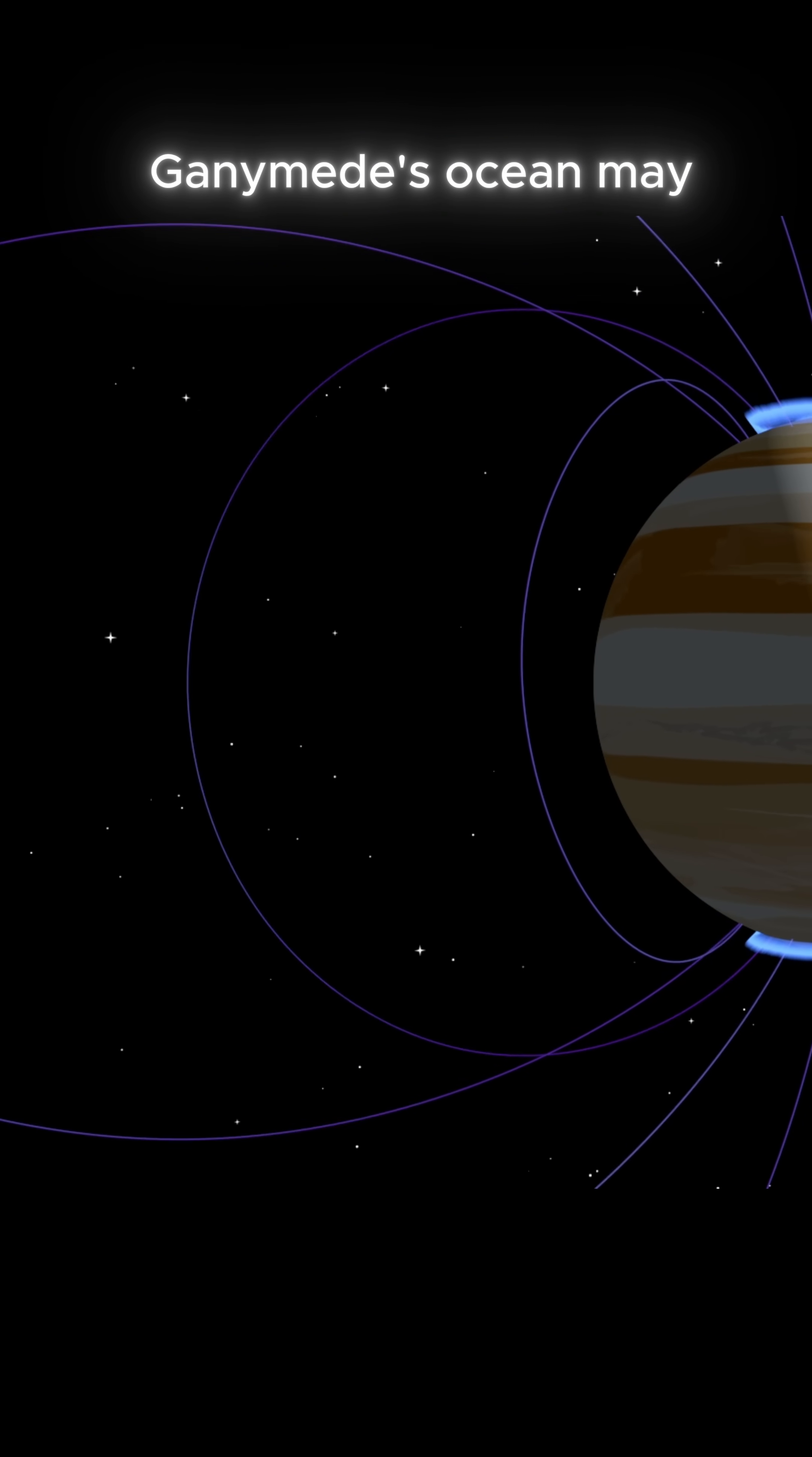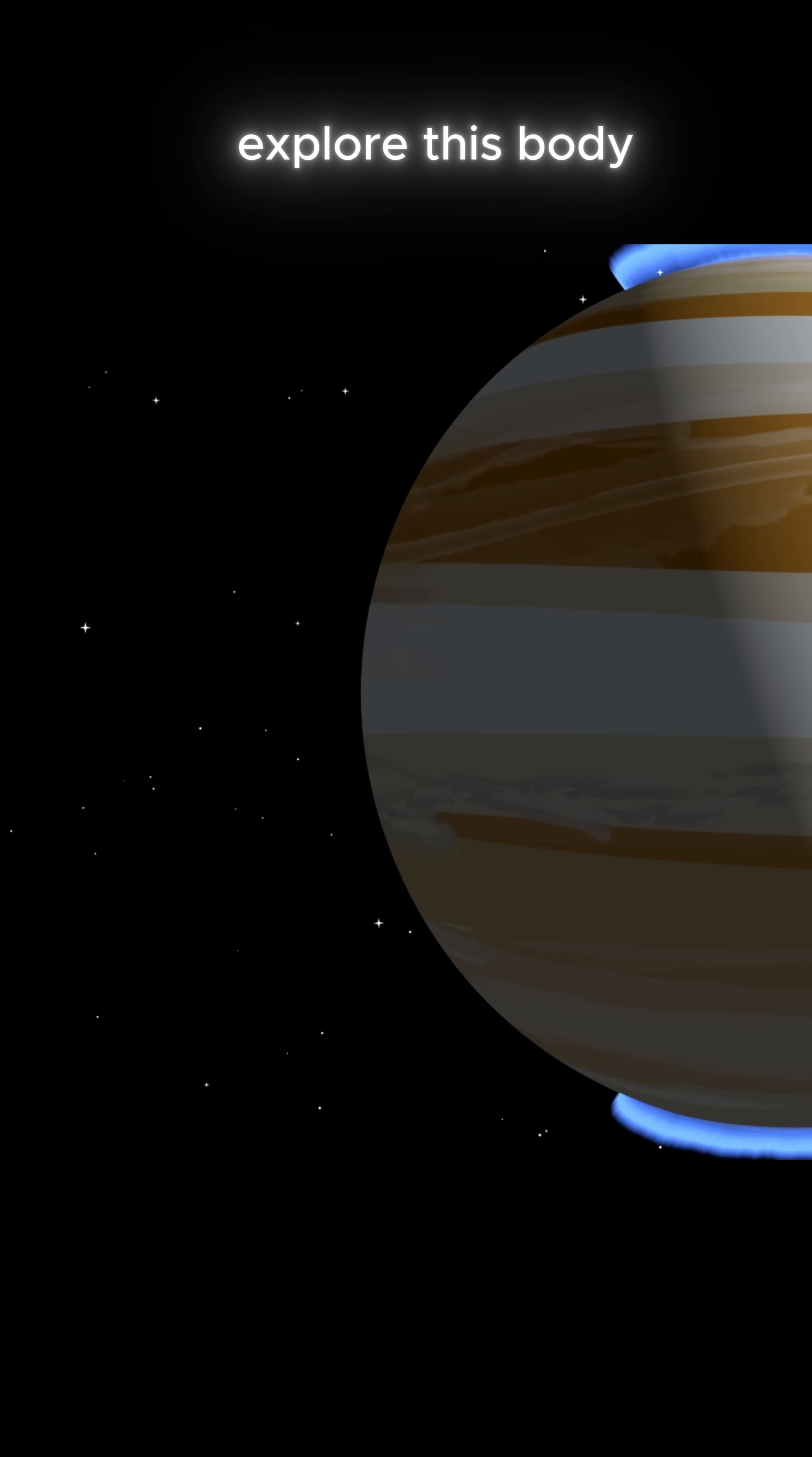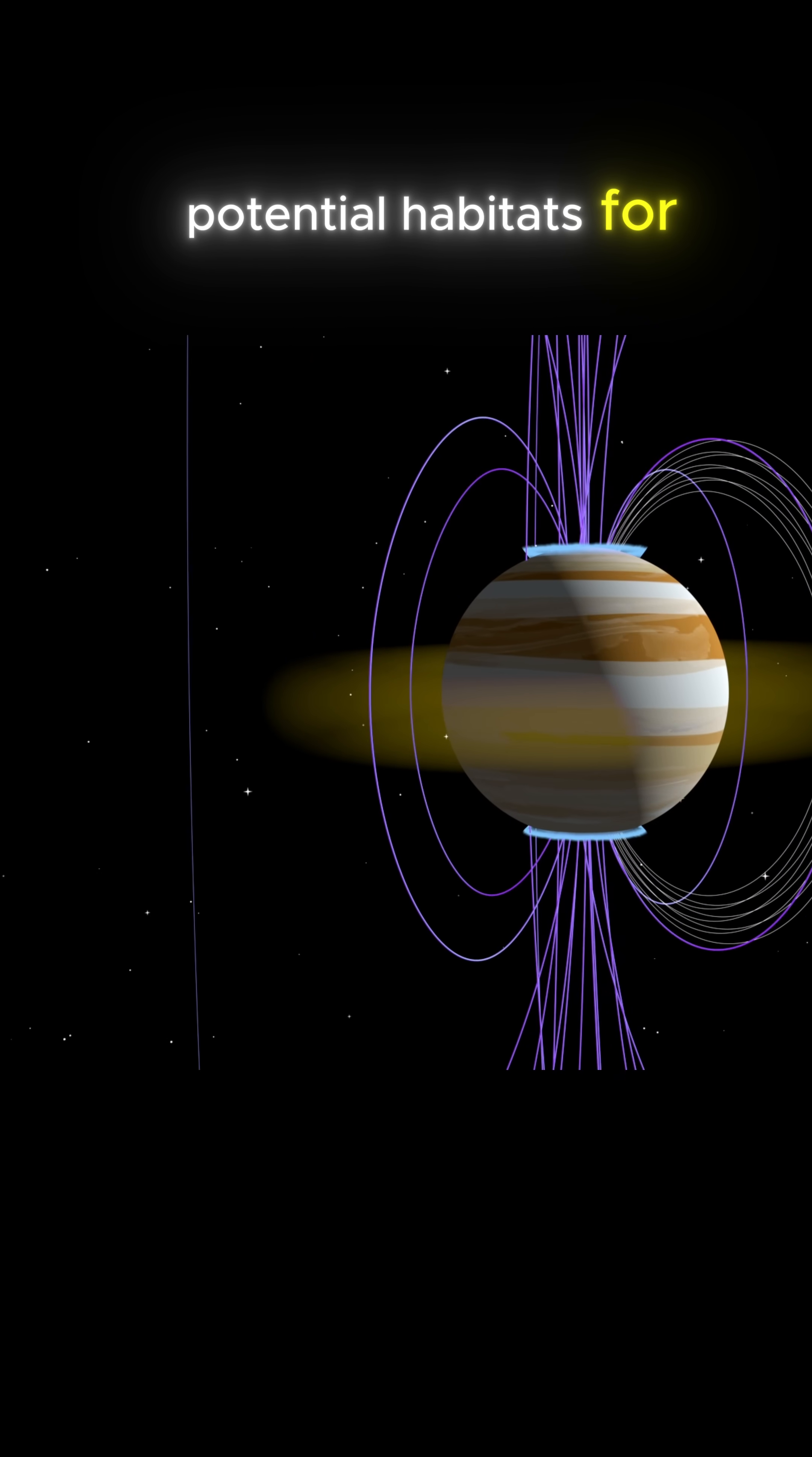Ganymede's ocean may be large enough to wrap around the entire planet, although we aren't sure what it's like or what it's even composed of. One of the key goals at Ganymede is to explore this body of water while also comparing it to Jupiter's other ocean-bearing moons, to get a clearer picture of these worlds as potential habitats for life.